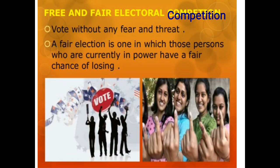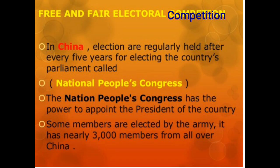With the help of this feature, we will try to prove whether China and Mexico are democratic. In China, elections are conducted regularly every five years. These elections are held for the selection of Parliament, which is referred to as the National People's Congress. Elections are conducted every five years to elect the National People's Congress.